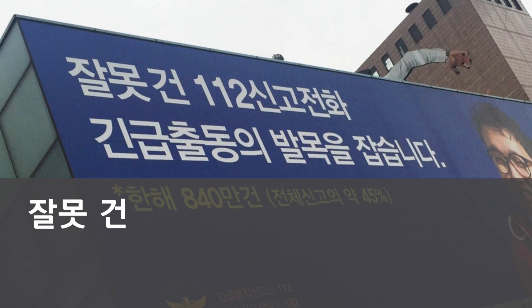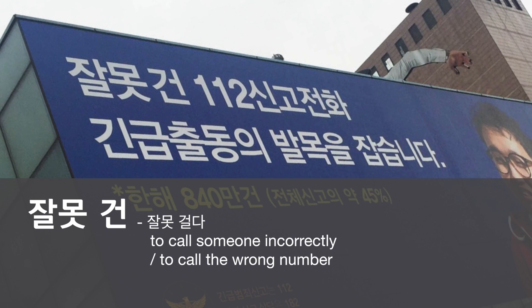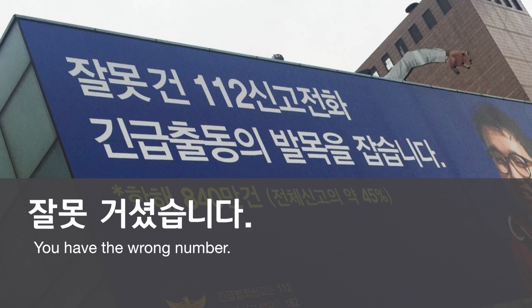Going back to the sentence, the first part is 잘못 건. 잘못 건 is the modifying form of 잘못 걸다. 걸다 means to call someone, so 잘못 걸다 means to call someone incorrectly or to call the wrong number. When somebody picks up the phone and it's not the person you wanted, they can say 잘못 거셨습니다 — 'You have the wrong number.'